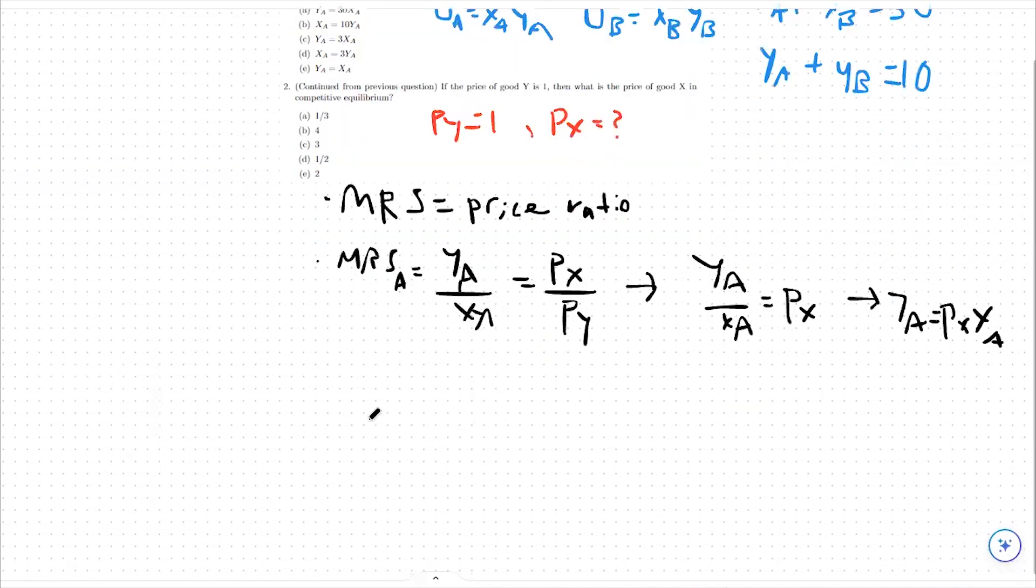So from there, we can move on to say that our MA, and I'm going to use a different color for this, our MA, our income for person A is equal to px times xA.